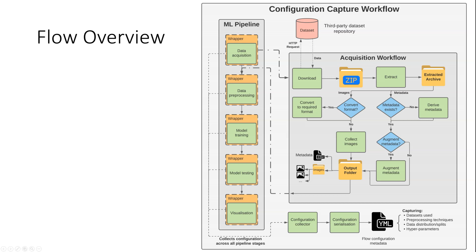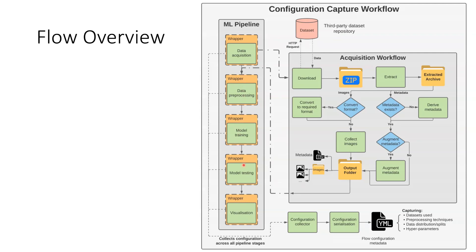Here we see a high-level overview of the proposed workflow. On initialization, the workflow begins to pull data from various online repositories. Data is downloaded, extracted and formatted into a uniform format for use with the ML pipeline workflow. Following this, the ML pipeline picks up the newly downloaded data and begins pushing it through its pipeline stages as depicted. Each stage is encapsulated in a software wrapper that records all user-defined settings, which are serialized into plain text via a YAML configuration file. This file acts as a self-documenting descriptor used to faithfully re-implement the ML pipeline to a high degree of accuracy.